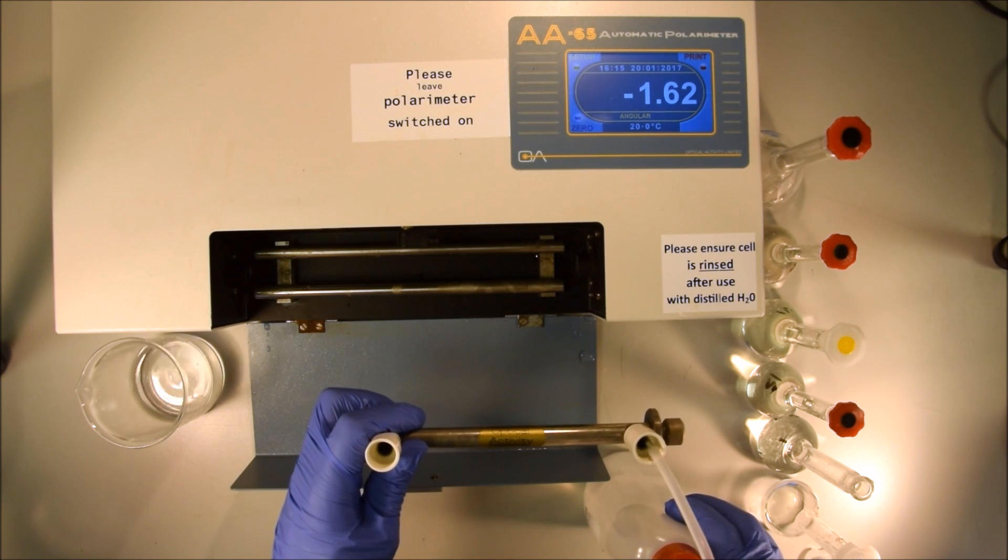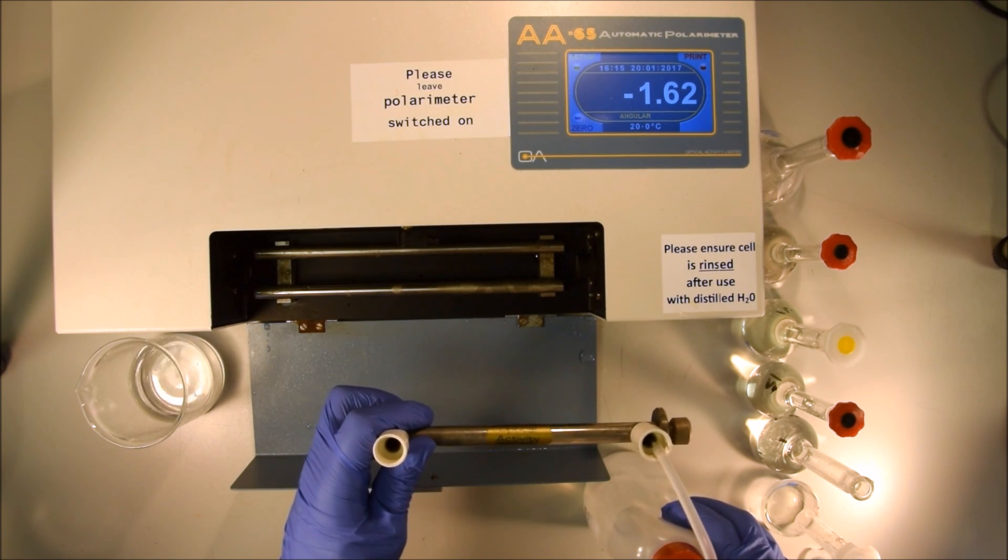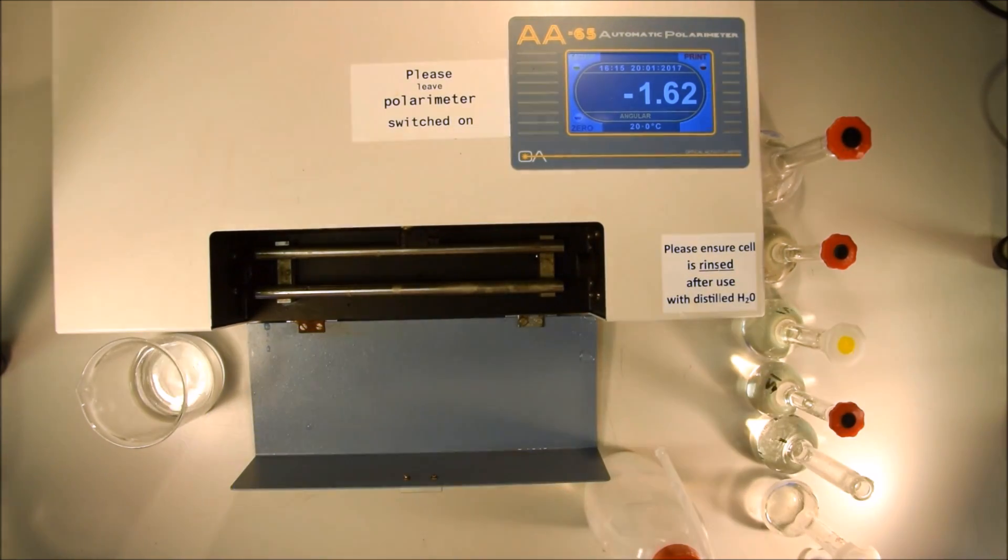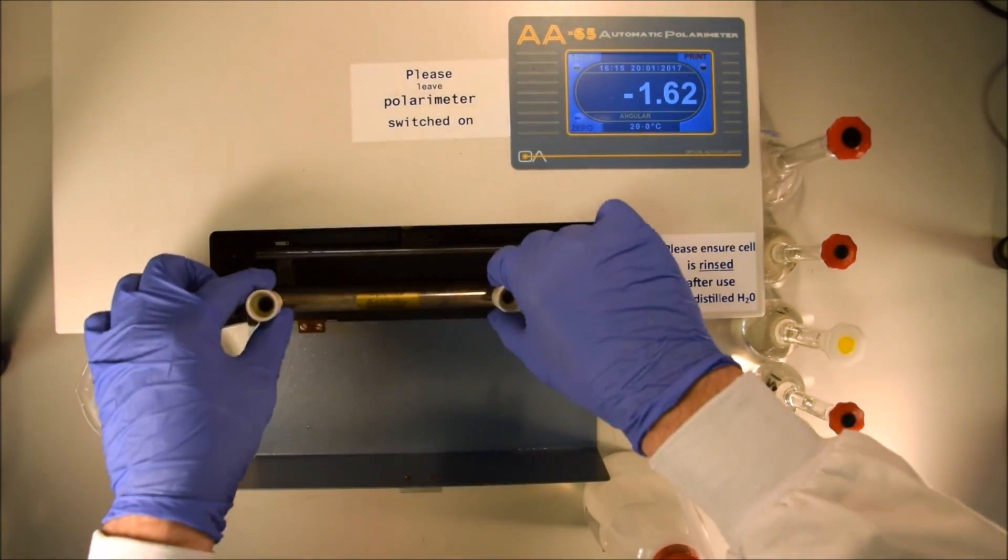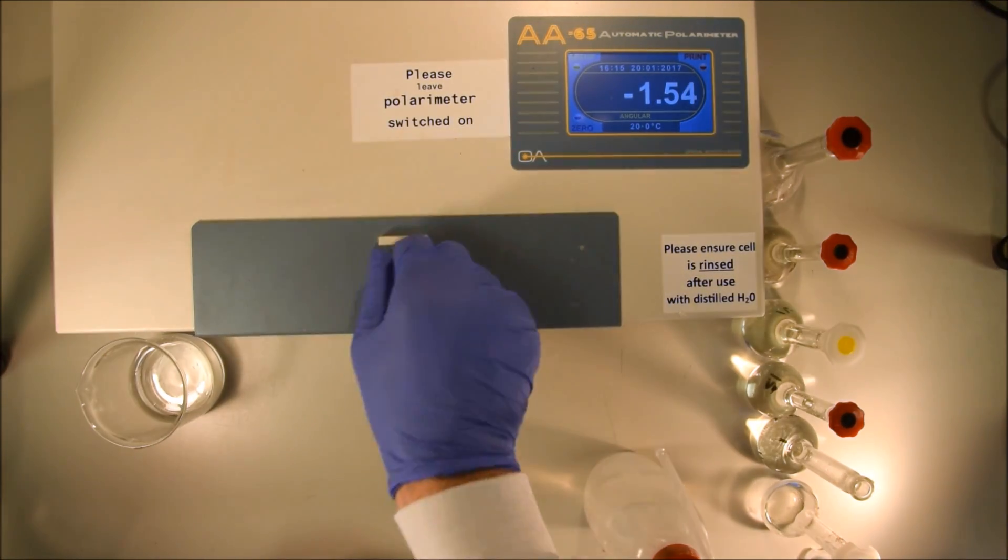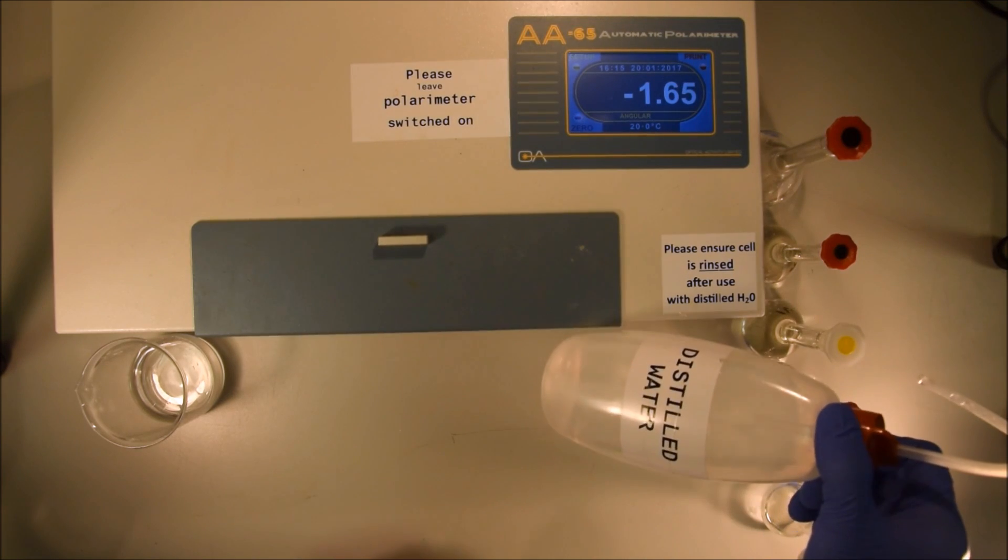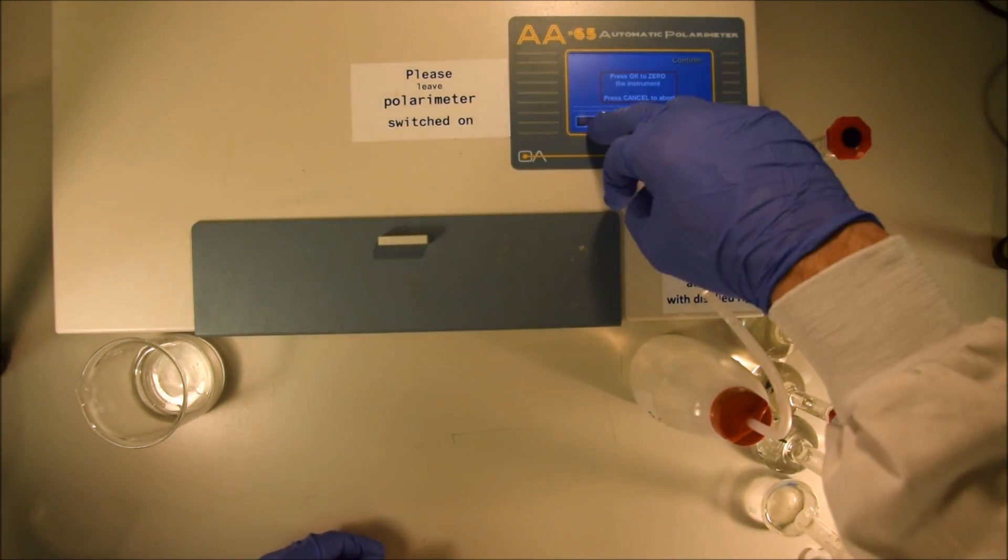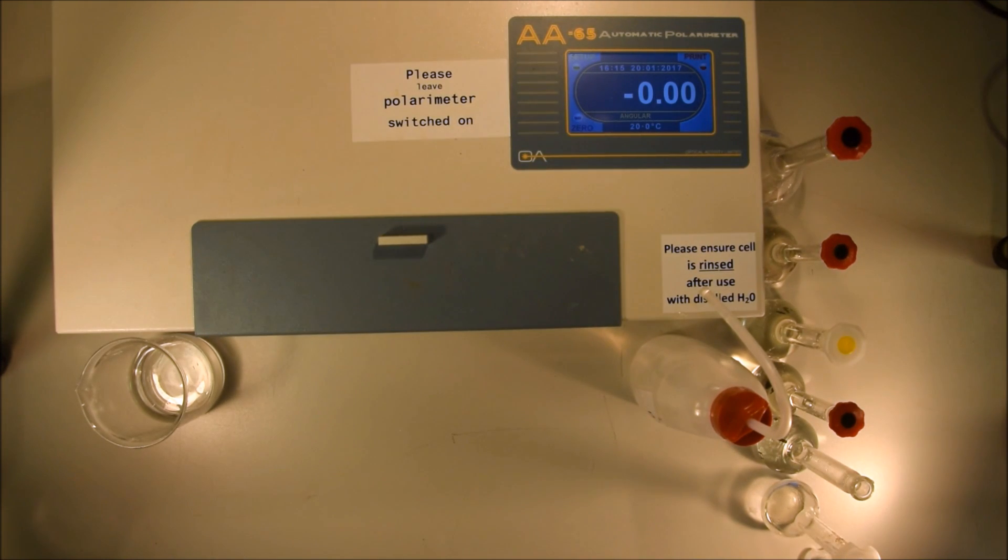We're going to fill the cell with the deionized water and use that to take a zero reading or to blank the machine. To blank the machine, it's a little different for each machine. This one has a touch screen. If you push the button or the area of the screen that says zero when the machine is filled with distilled water and then say yes, the machine will now read zero.